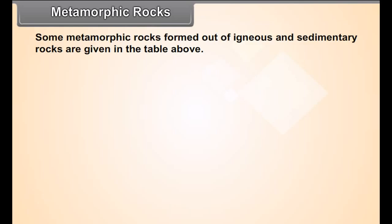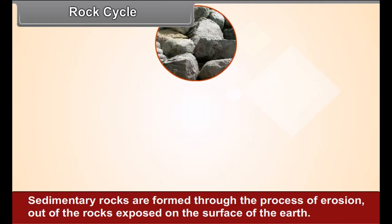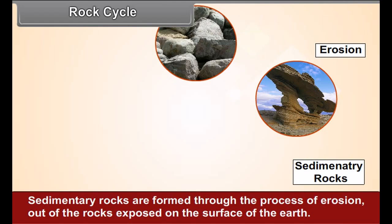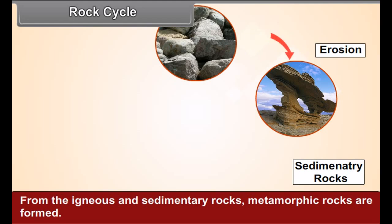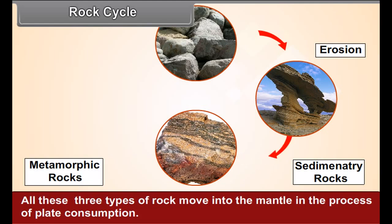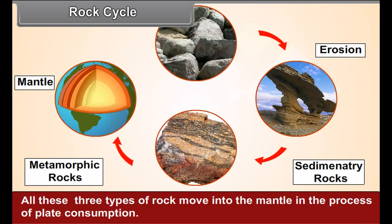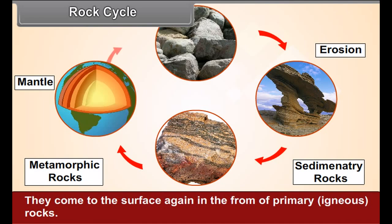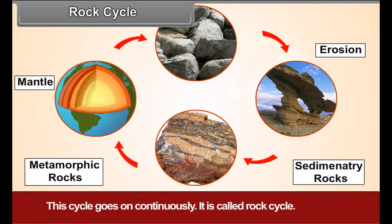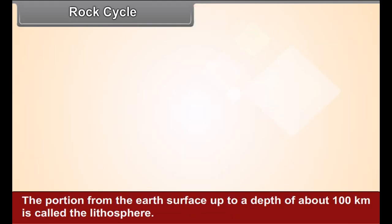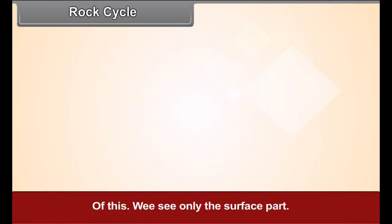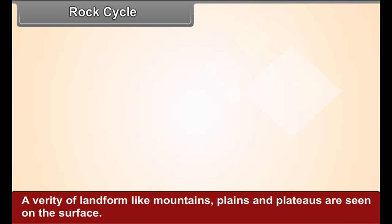Some metamorphic rocks formed out of igneous and sedimentary rocks are as follows: sedimentary original rock limestone forms metamorphic rock marble; sedimentary original rock coal forms metamorphic rocks graphite and diamond; sedimentary original rock sandstone forms metamorphic rock quartzite; sedimentary original rock shale forms metamorphic rock slate.